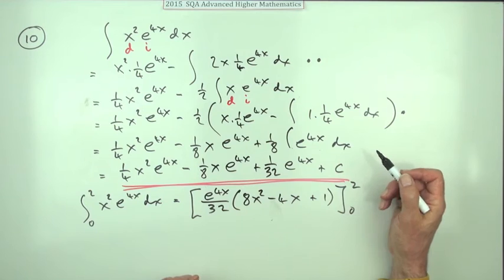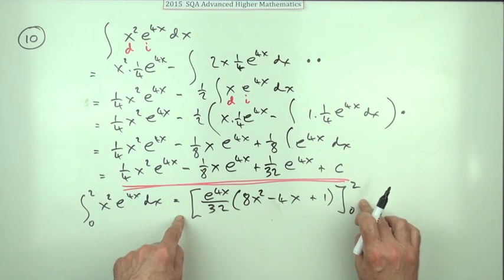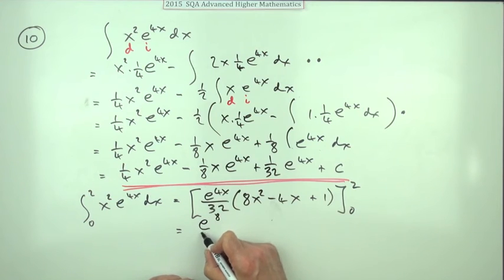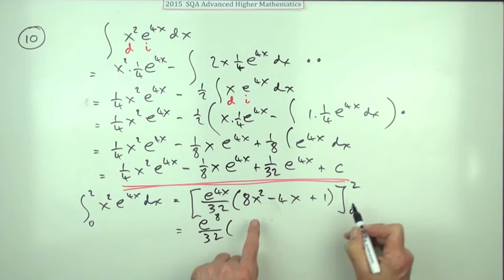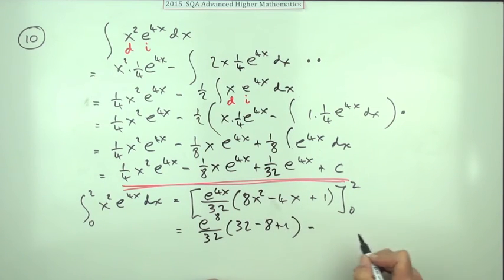The fourth mark's for the final integral and substitute in the limits. So I've not actually substituted them in yet. So here we go. So we've got e to the 8 over 32 times, that's 4 times 8 is 32. Minus 4 times 2 is 8. Plus 1. Minus.